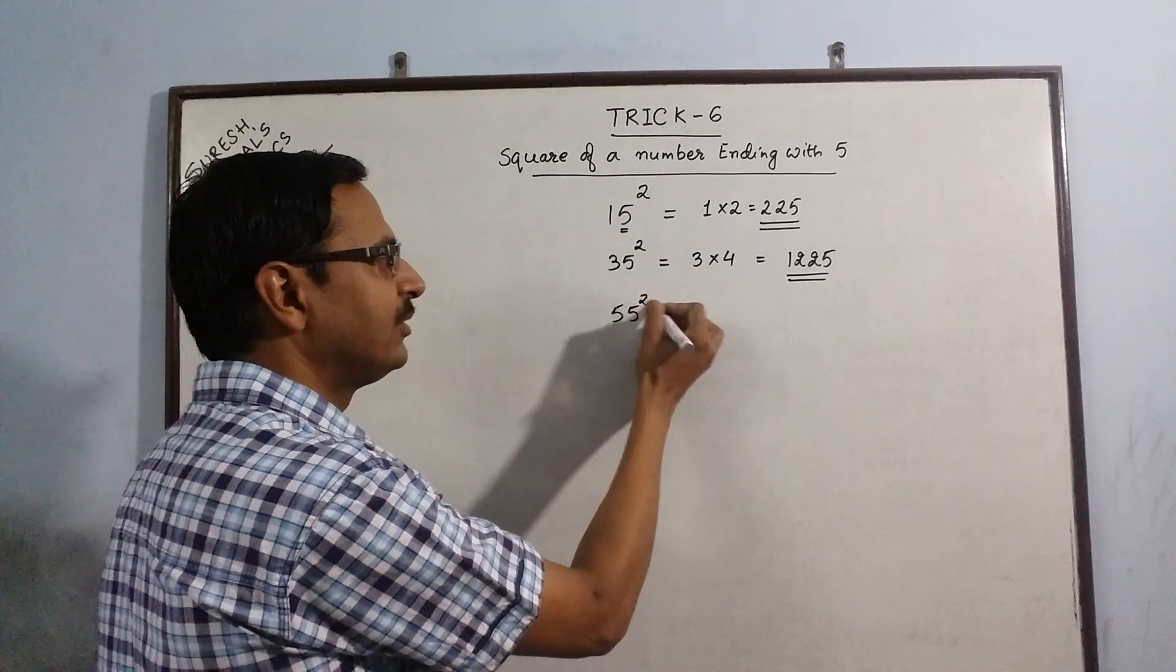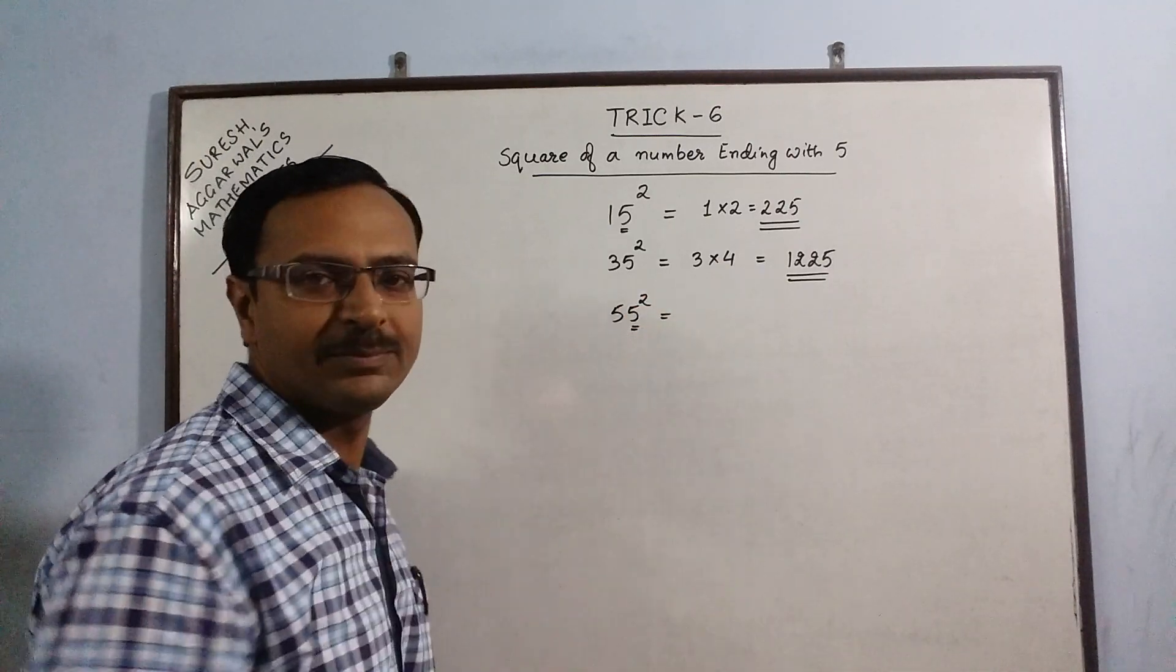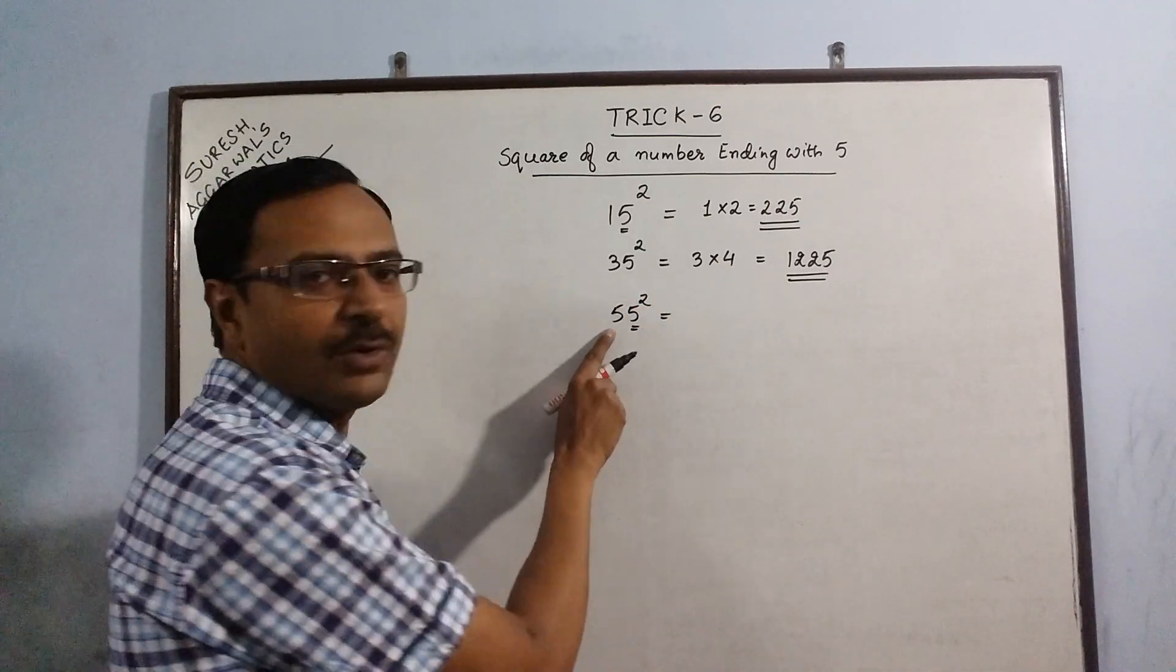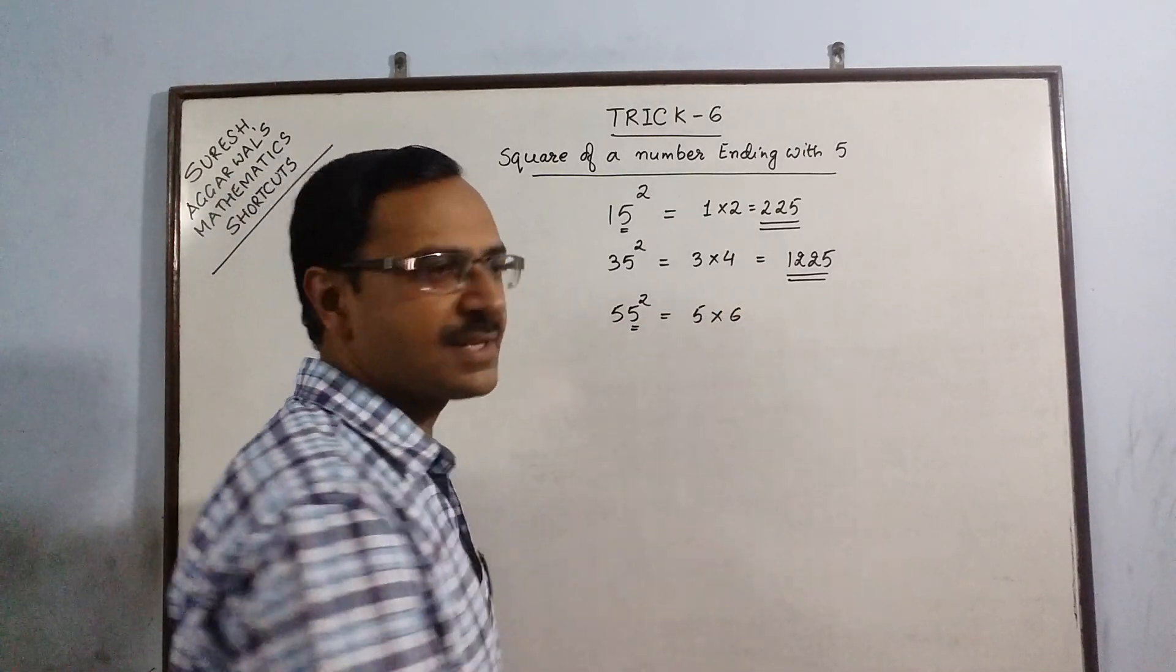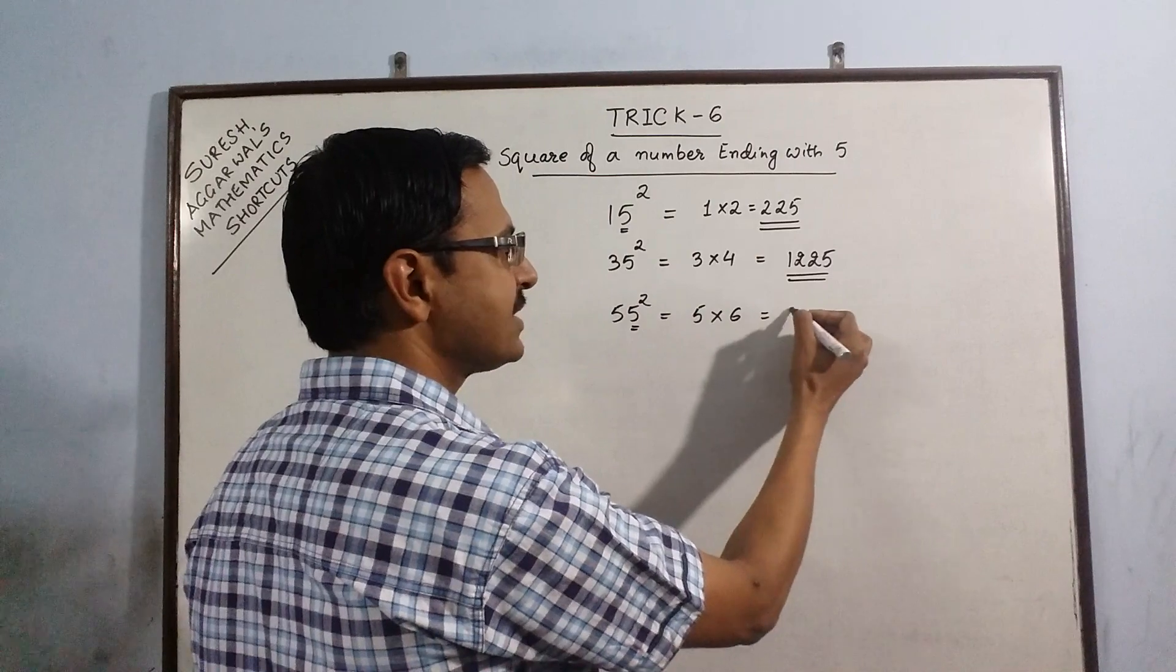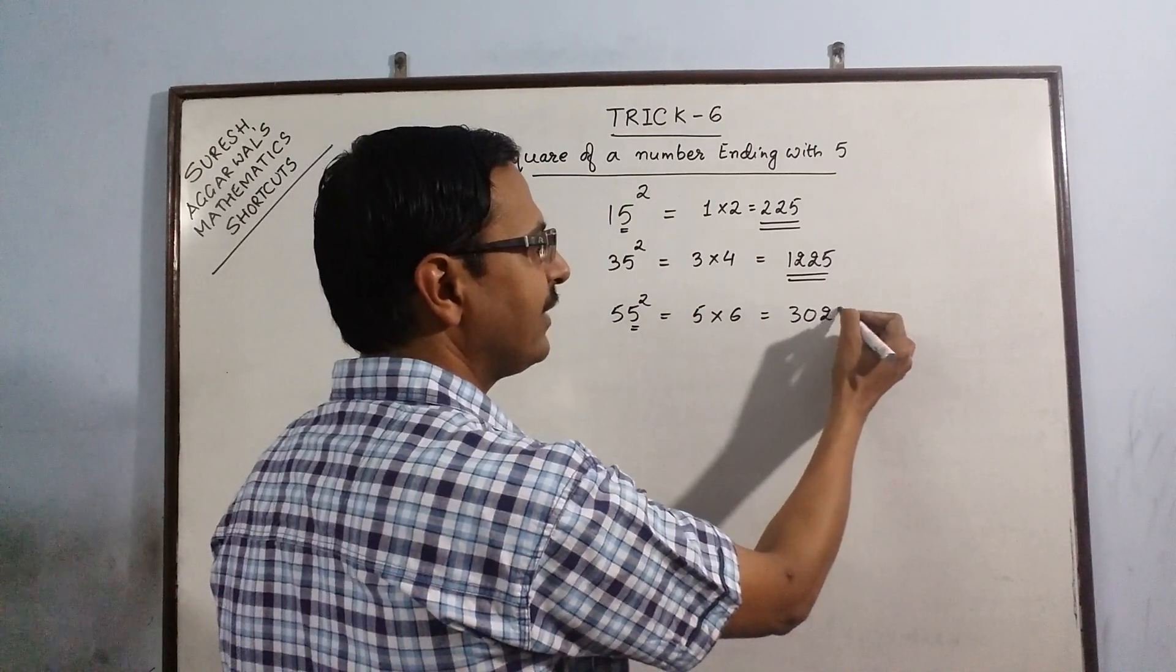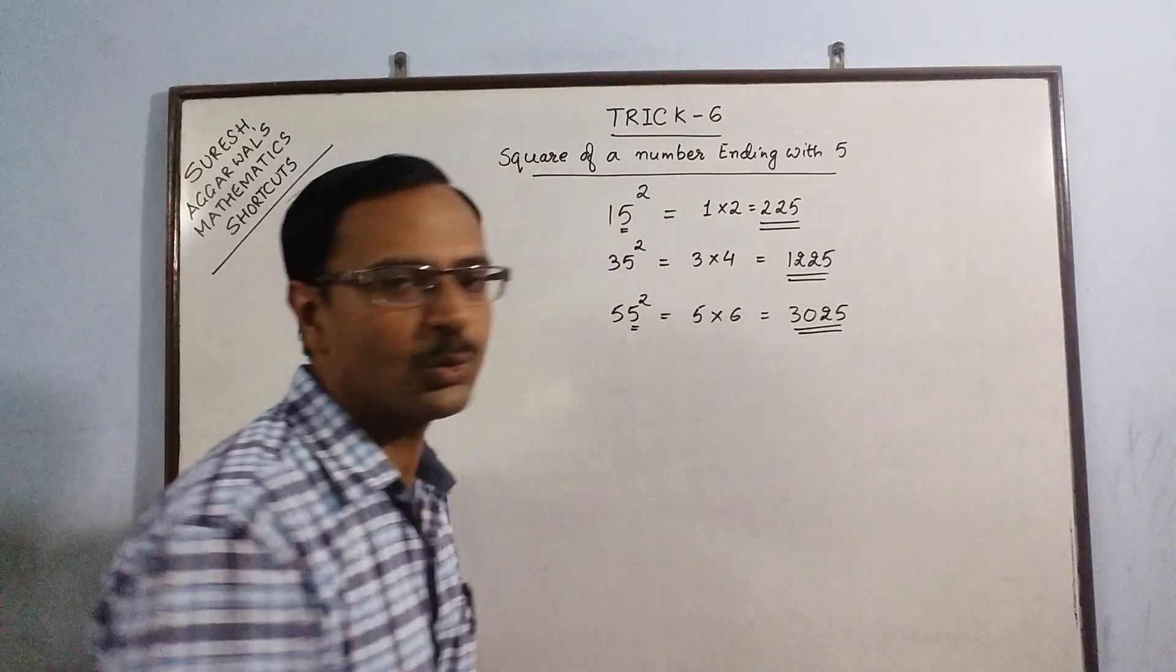55 square. Just forget this 5, we are left with only one 5. Multiply by its successor 6. The product is 30. Put a 25. Answer is 3025.